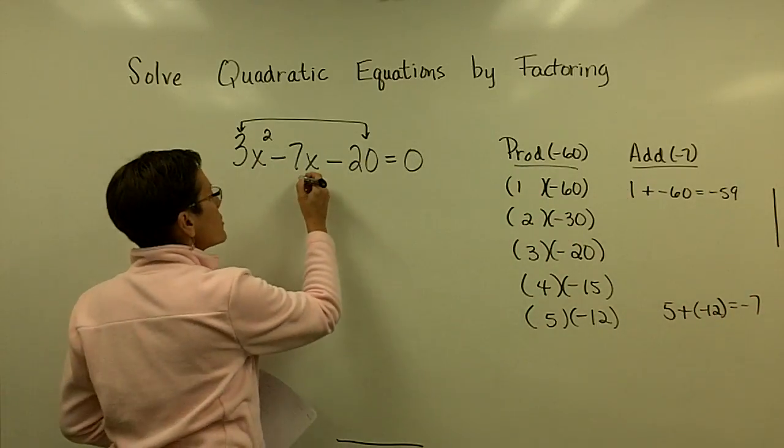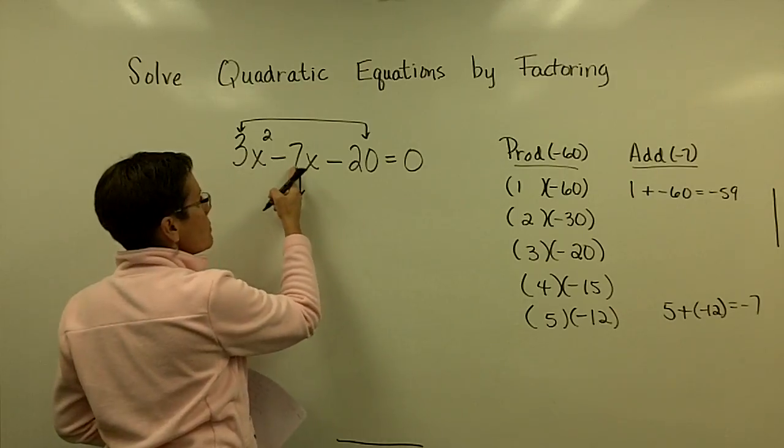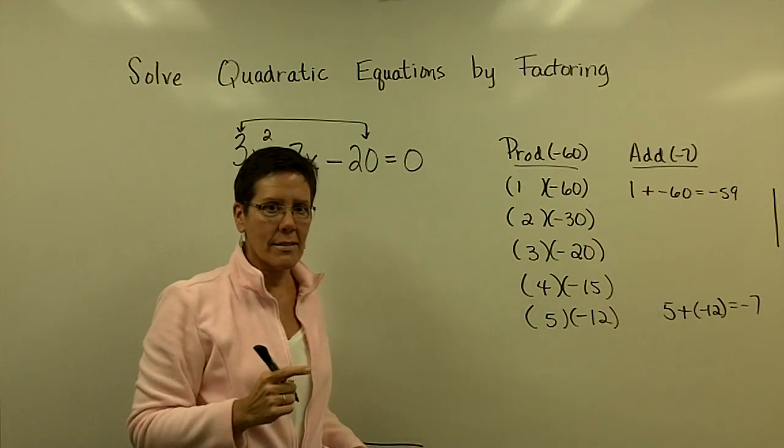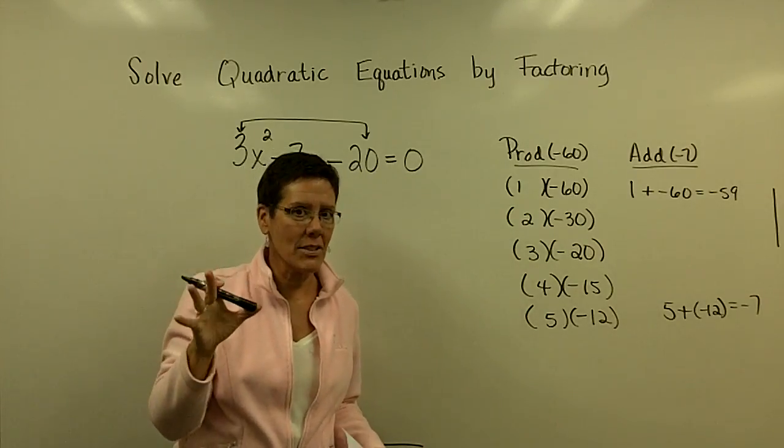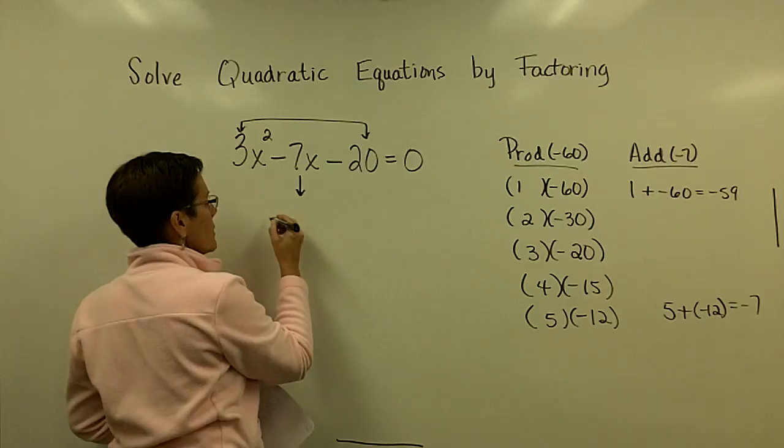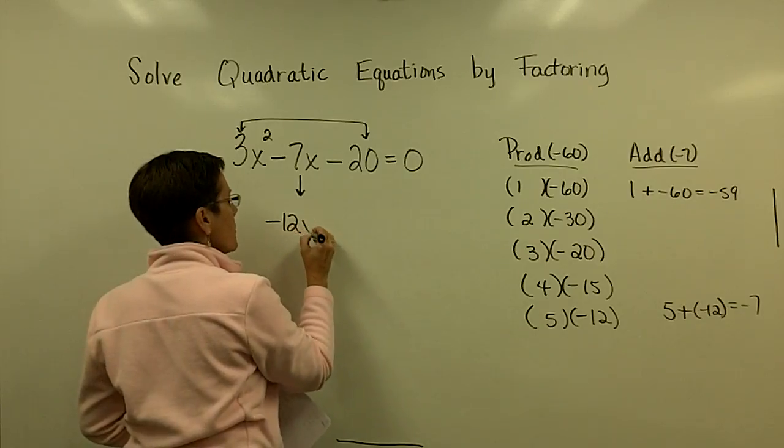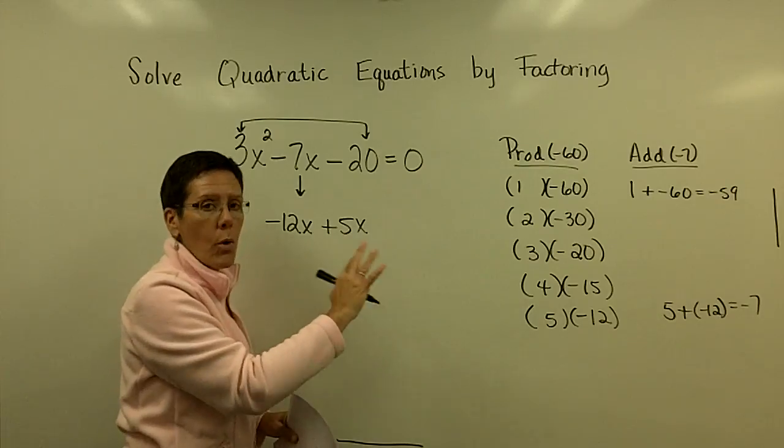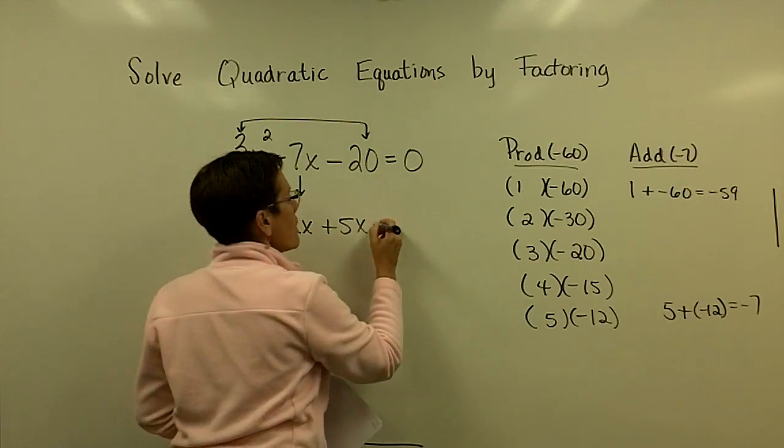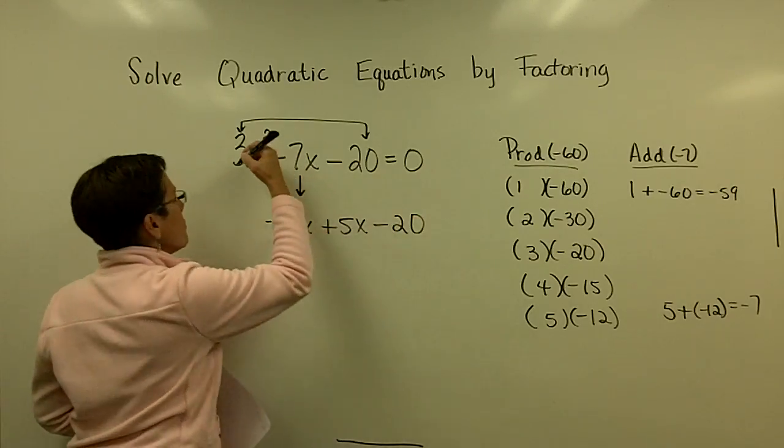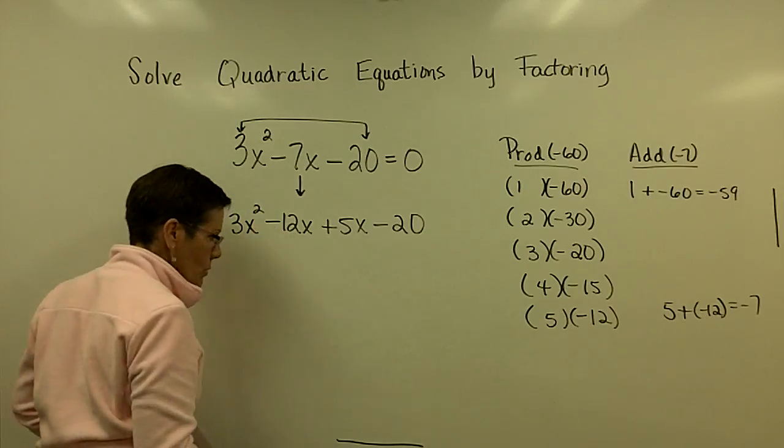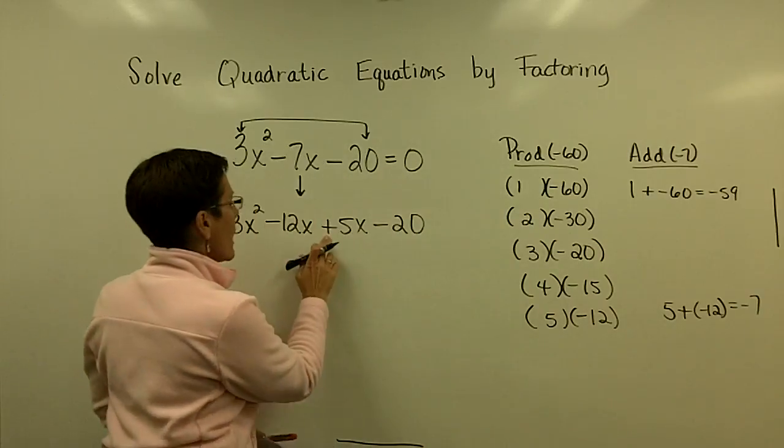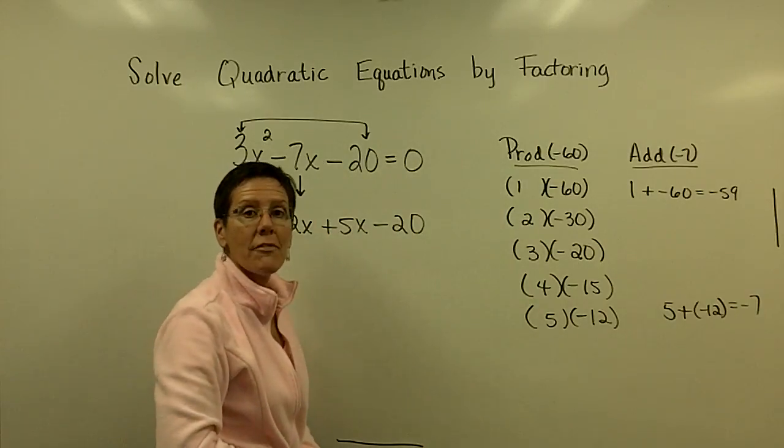So remember, we factor this by grouping. We're going to replace this middle term with a 5x and a minus 12x. But Pat likes to put the minus 12 first. I like to put the minus 12x first and then the 5x.